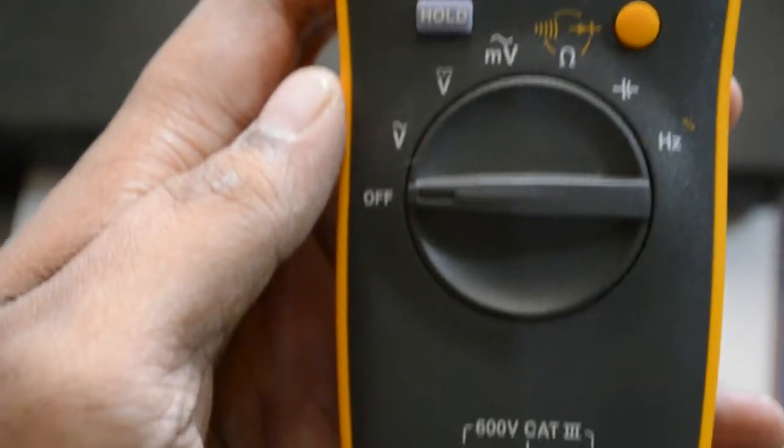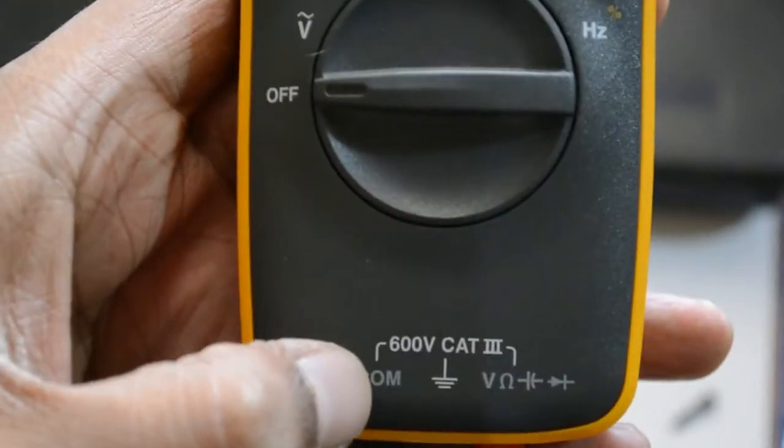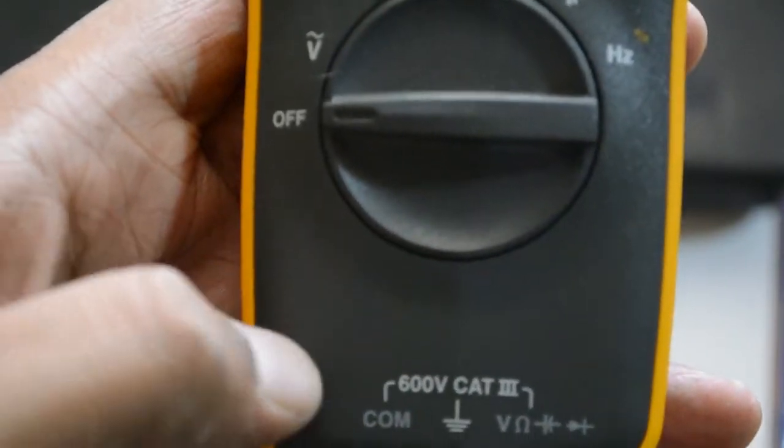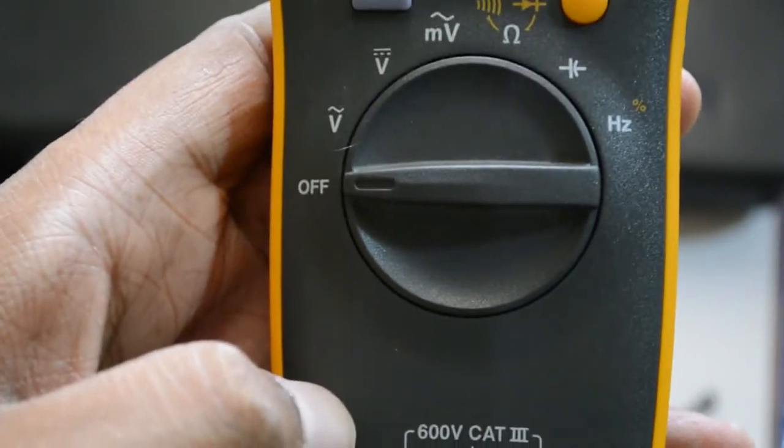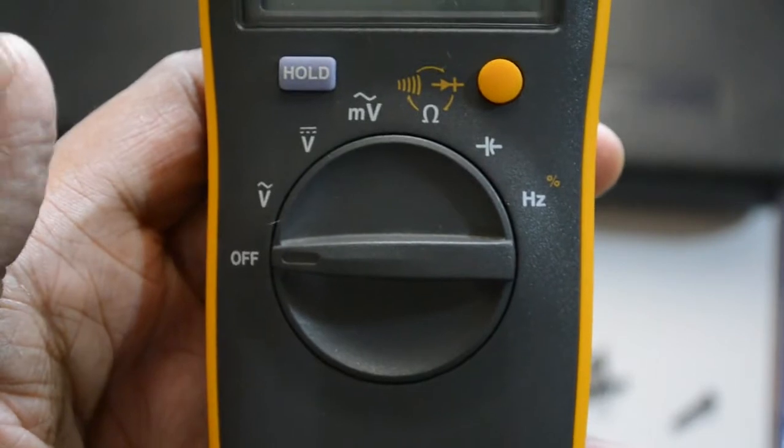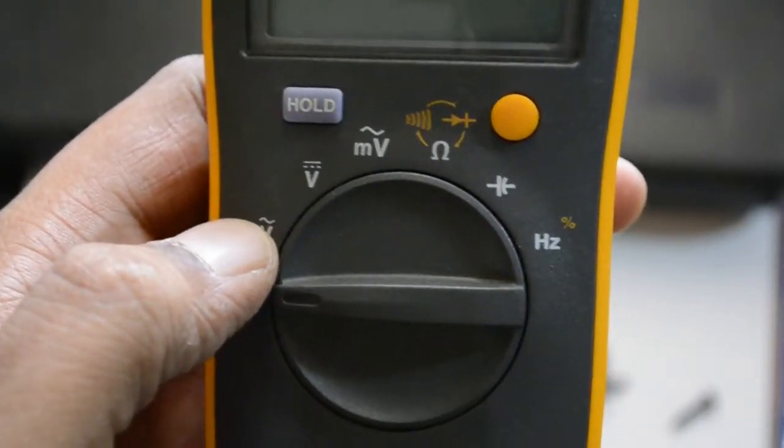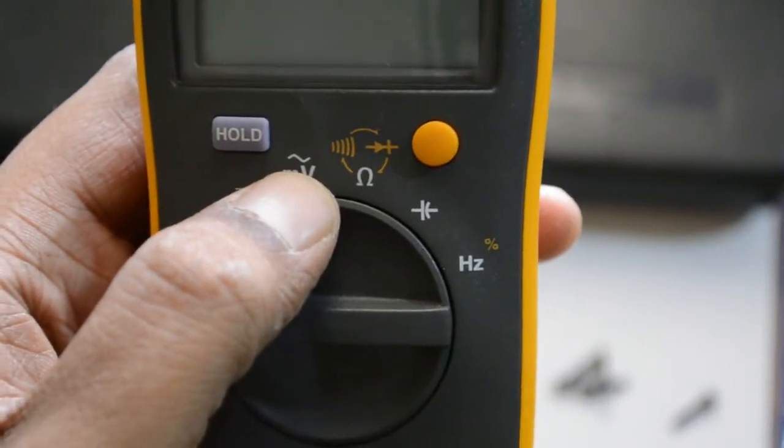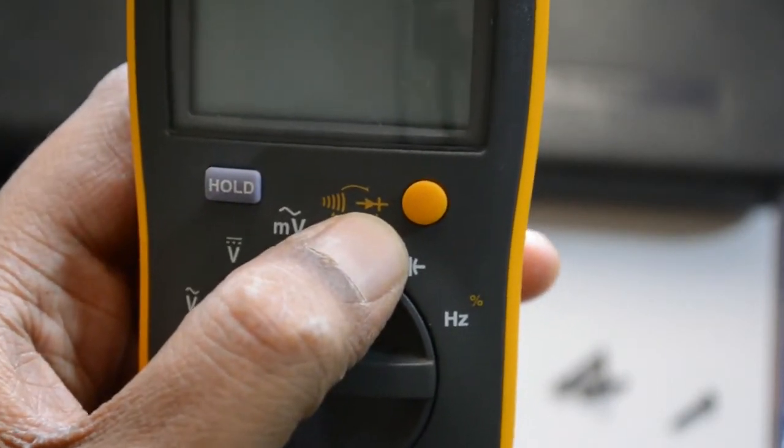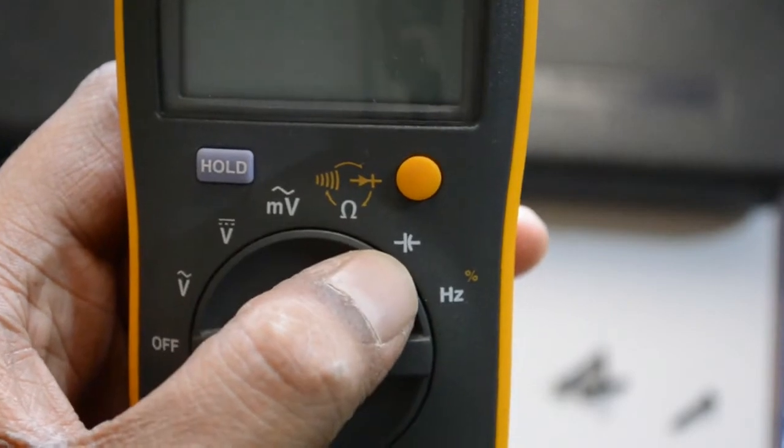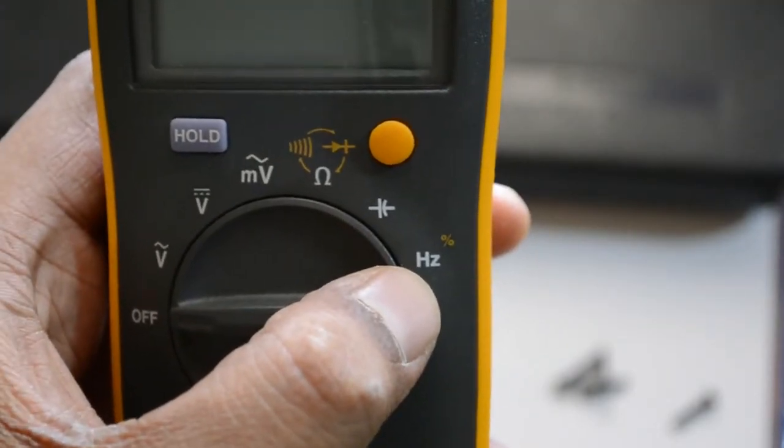So here's the meter, here's how it looks. It just has two inputs. There's no current rating on this so I cannot measure current. It's a very basic multimeter. You have the standard AC voltage, DC voltage, millivolts AC, and then continuity, diode testing, resistance, capacitance, and frequency.